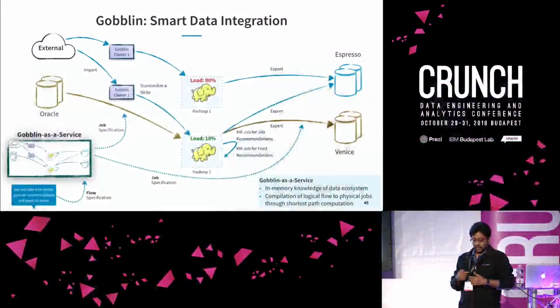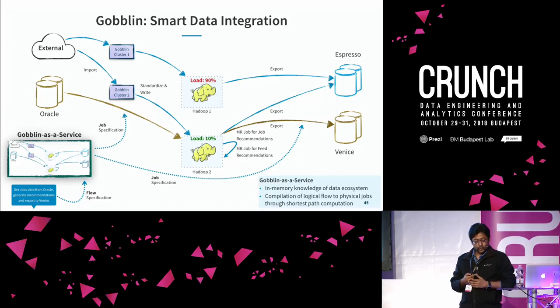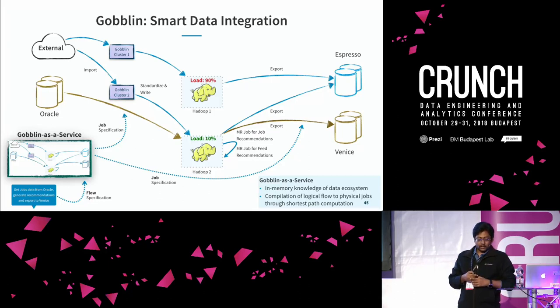We have something like that which we call Goblin service. It's part of the Goblin ecosystem. Given a logical specification — a logical flow of what needs to be done — it breaks it down into physical jobs that can make that specification happen every time it executes. For getting data from Oracle onto Hadoop, generating recommendations, and moving to Venice, it knows to set up three jobs. In case of disaster, it automatically rebalances because it knows your ecosystem. So you get disaster recovery for free and an easier way to specify pipelines.